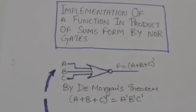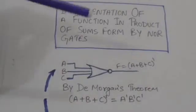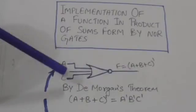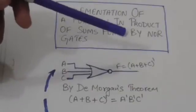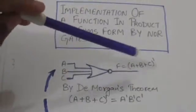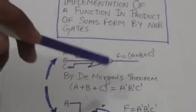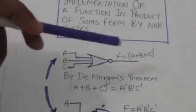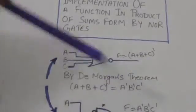Hello friends, welcome back. In this tutorial we will study about the implementation of a function which is expressed in product of sums form by NOR gates. Look at this NOR gate — it has three inputs: A, B, and C. The output of this NOR gate would be the complement of A plus B plus C. By De Morgan's theorem, the complement of A plus B plus C equals A-not AND B-not AND C-not.